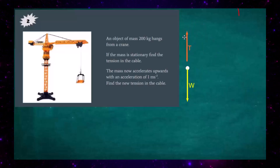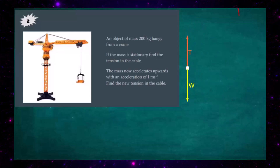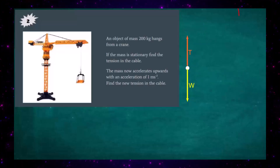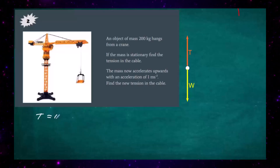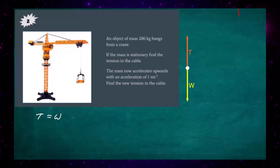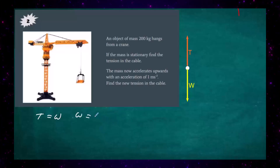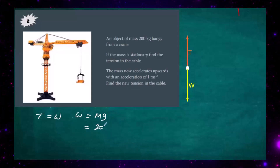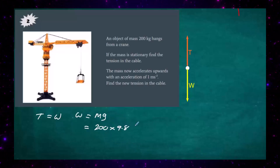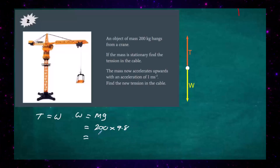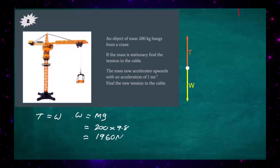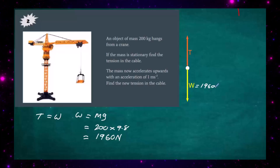The weight is balanced by the tension in the rope pulling upwards. So tension equals weight when the object is stationary and not accelerating. We can work out the weight: W equals mg, which is 200 multiplied by 9.8, giving us 1960 newtons acting downwards.